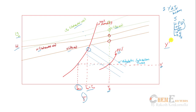I will explain with an example so you can understand easily. This is how you use the psychrometric chart to get the various parameters if any two quantities are known.